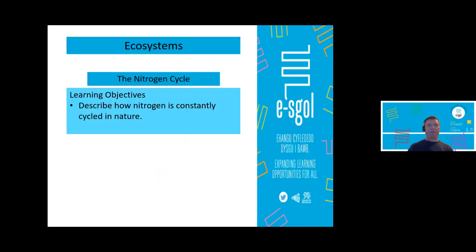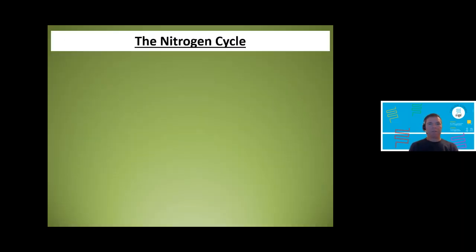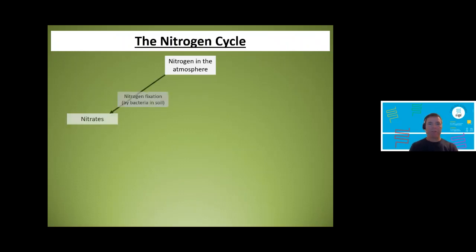Let's move on to the nitrogen cycle. The carbon cycle is probably the easier one — the nitrogen cycle has a bit more going on. We start with nitrogen gas in the atmosphere, just as we had carbon dioxide before. There are bacteria in the soil able to fix nitrogen. What we mean by fixation of nitrogen is converting nitrogen gas into nitrates.